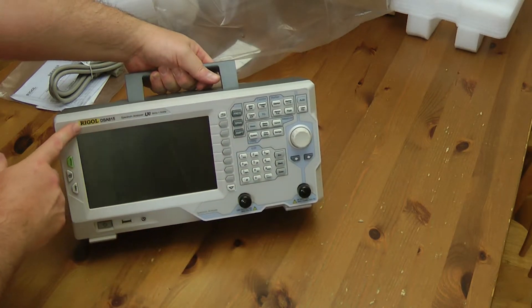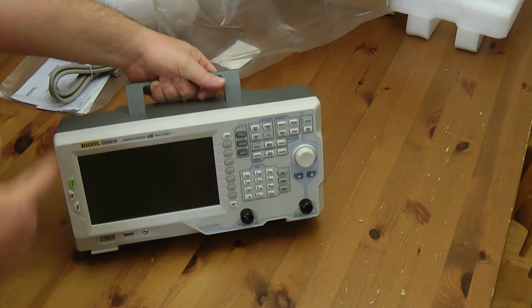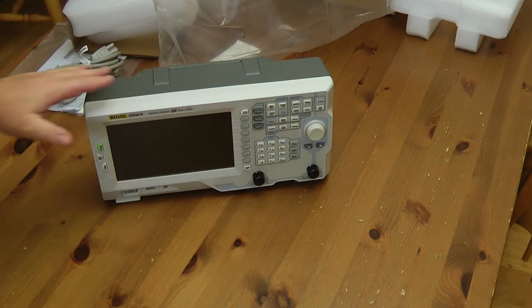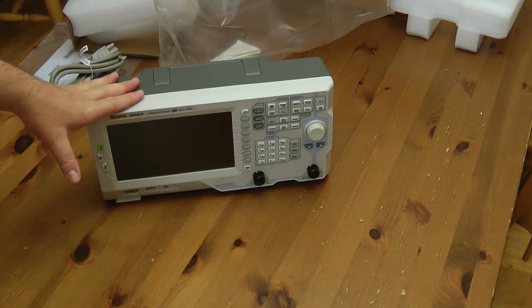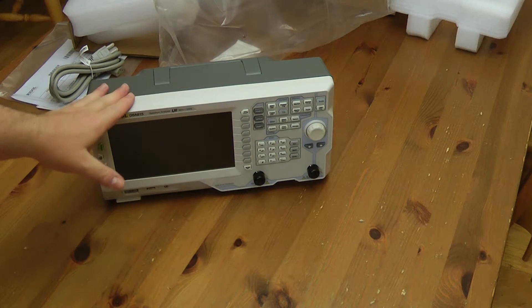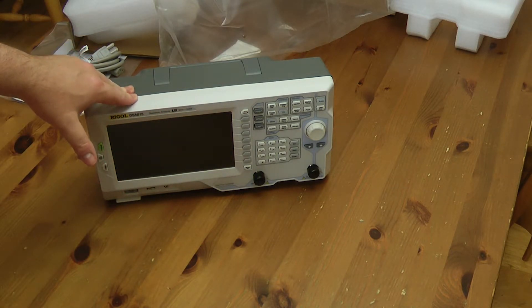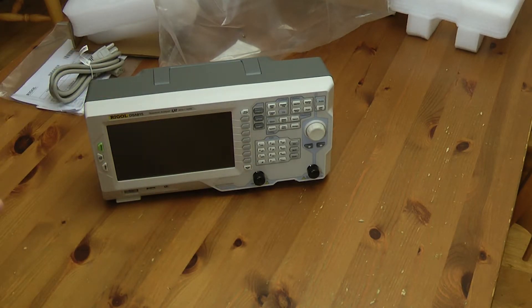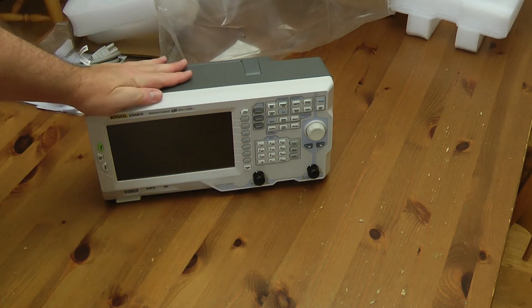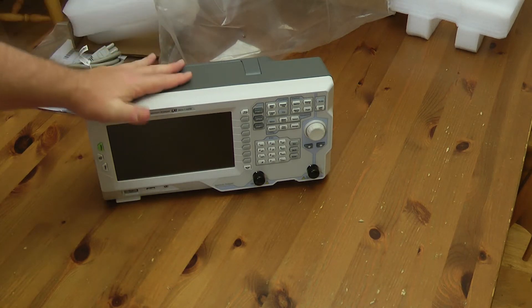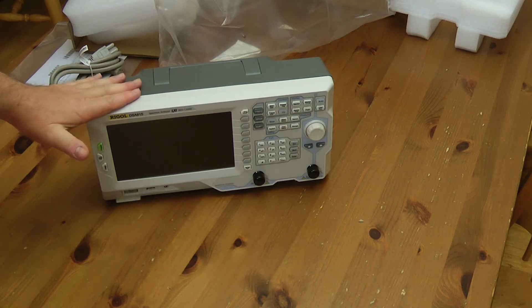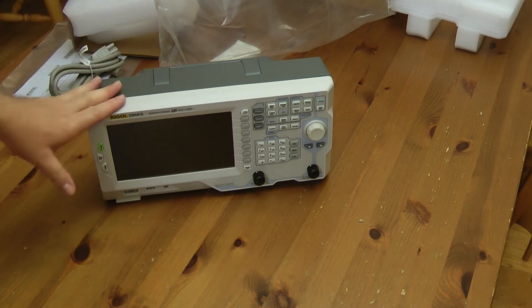For now, the Rigol DSA815-TG. What's really interesting about this is the hardware is no different in the non-TG versions. This has a lot of capabilities built into it, and the way you get these capabilities is you simply buy the licensing for them and unlock them. It's almost like imagine buying a new Nintendo Switch with all these video games built into it, but you can't access them unless you pay for them. They're already hard-coded into it. That's what this has. The tracking generator licensing is included in this. There are other features like EMI testing and VSWR bridge and a few other things that I have no personal need for in my testing needs.